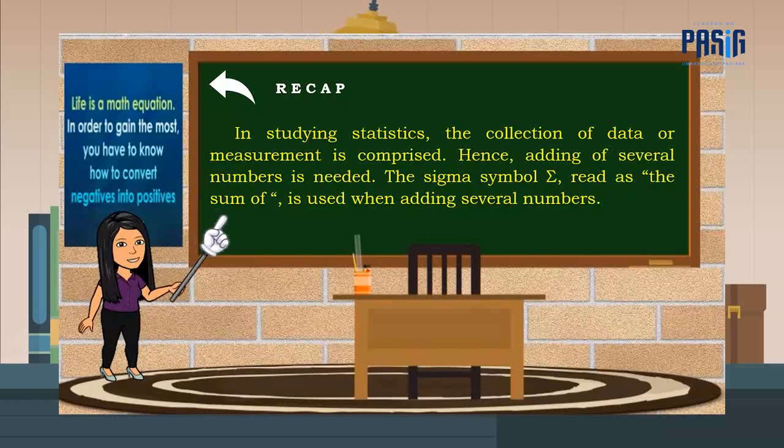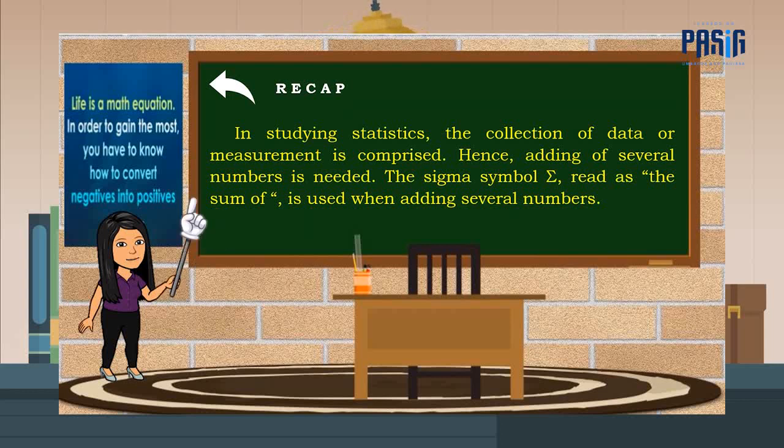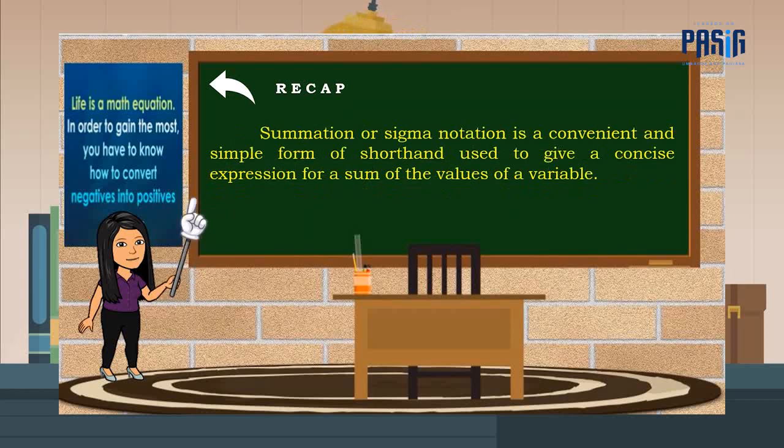Let us have now a recap. In studying statistics, the collection of data or measurement is comprised. Hence, adding of several numbers is needed. The sigma symbol, read as the sum of, is used when adding several numbers. Summation or sigma notation is a convenient and simple form of shorthand used to give a concise expression for a sum of the values of a variable.